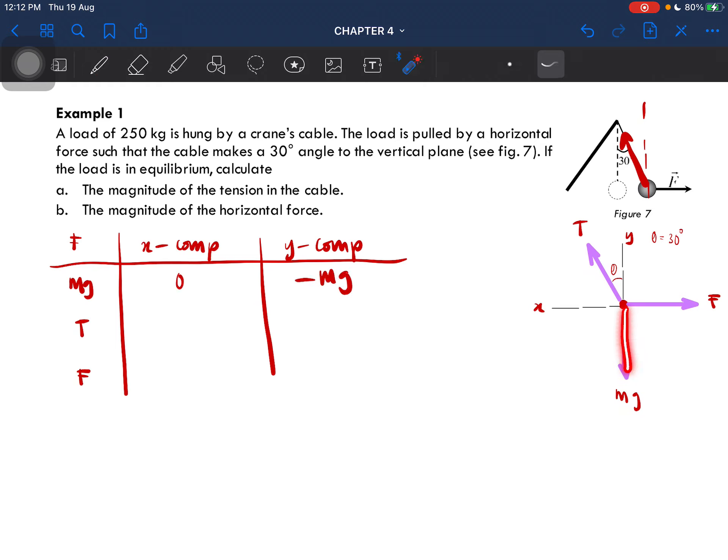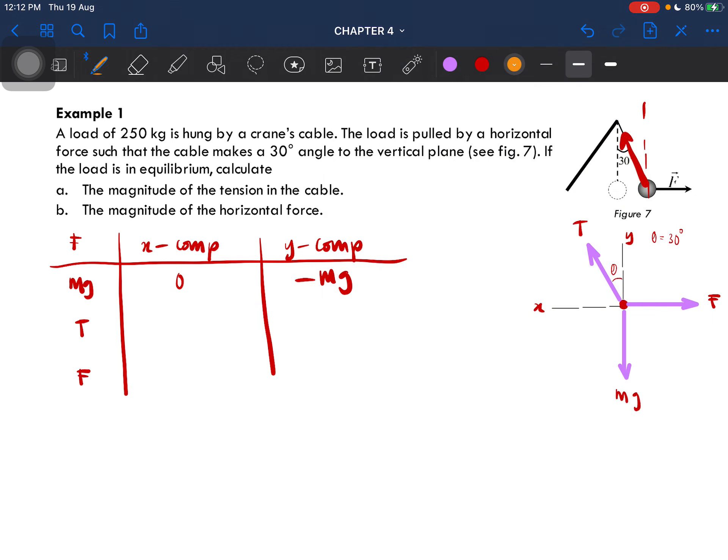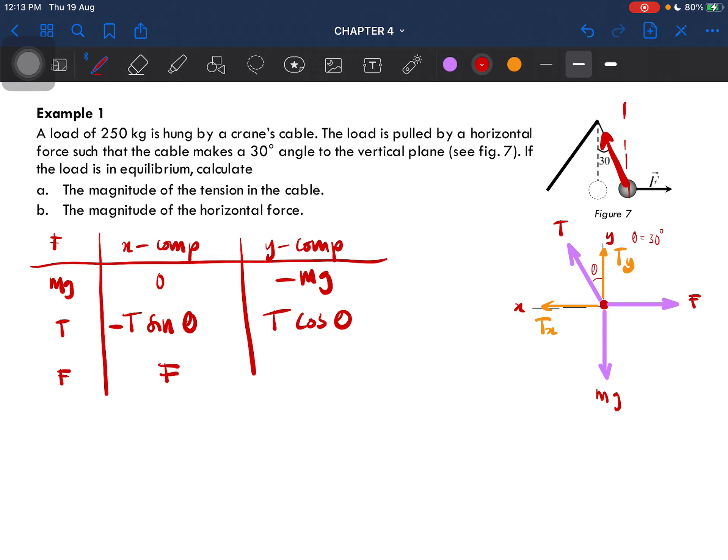We have tension with both x and y components. So Tx is this one in orange, this is our Tx, and this is our Ty. Tx component is negative T sine theta because T is pointing to the left. The y component is positive T cos theta because it's pointing upwards. And then we have the force which is just the x component; the y component is zero.